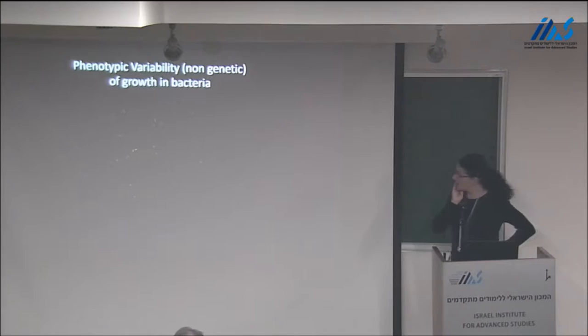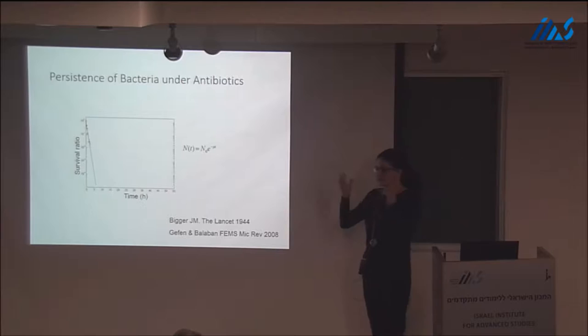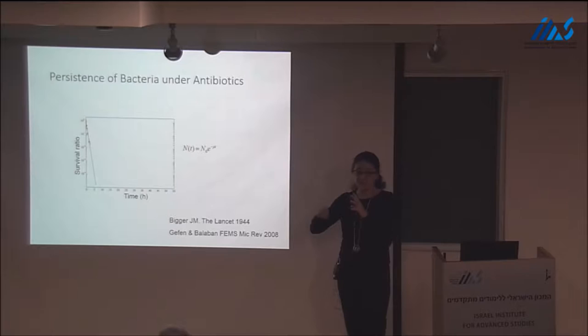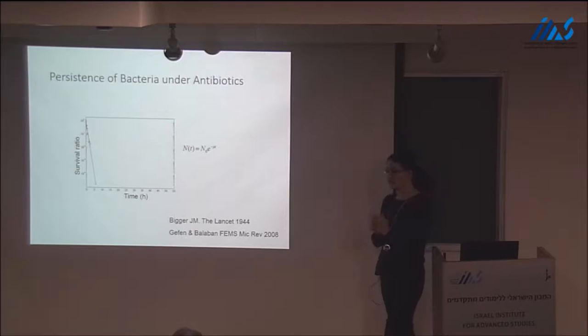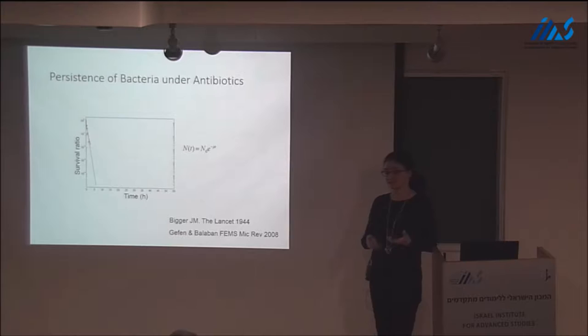Why is it interesting? This variability influences the outcome of the whole population. Typically, if you take these bacteria and grow them, the fast-growing bacteria will dominate the population, and the non-growing bacteria will be a very small minority — in most assays they make no difference. But when do they make a difference? Under antibiotics. Because antibiotics are targeting much more effectively actively growing cells. Most antibiotics target actively growing cells much more efficiently, and when bacteria are in this transiently non-growing state, they are more resilient to antibiotics.